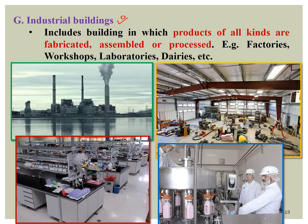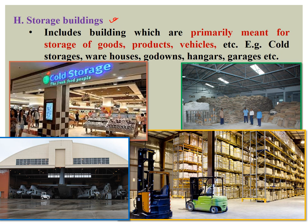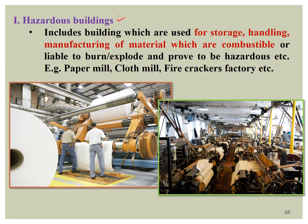Industrial buildings are where products are manufactured. These include heavy industries, as well as laboratories and dairies. Storage buildings are primarily meant for storage of goods, products, or vehicles — for example, hangars, food storage, and cold storage. The type of storage depends on the products to be stored.